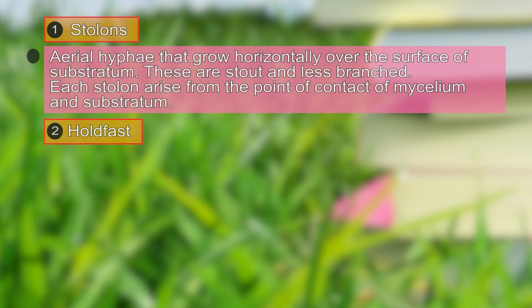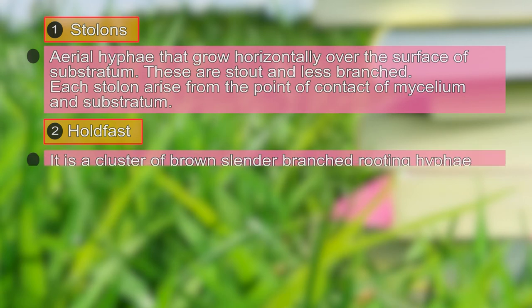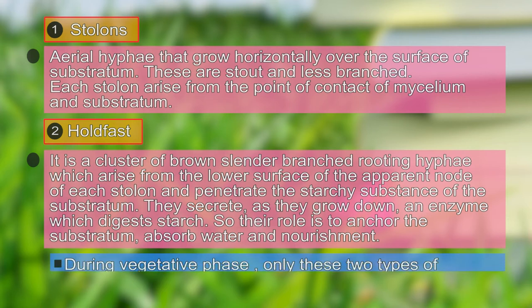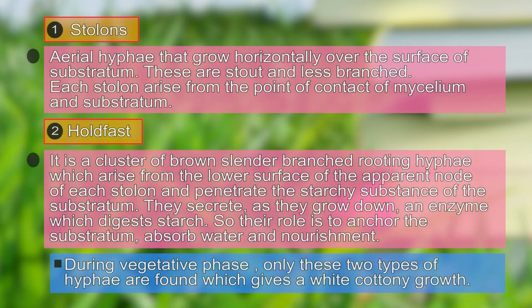The second type is known as rhizoids or rhizoidal hyphae. These are a cluster of brown, slender, branched, rooting hyphae that arise from the lower surface of the apparent node of each stolon and penetrate the starchy substance of the substratum. They secrete enzymes to digest material in the substratum, and their role is to anchor the fungus as well as absorb water and nourishment.